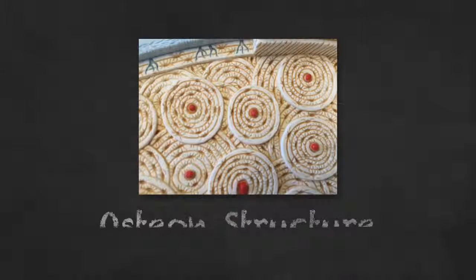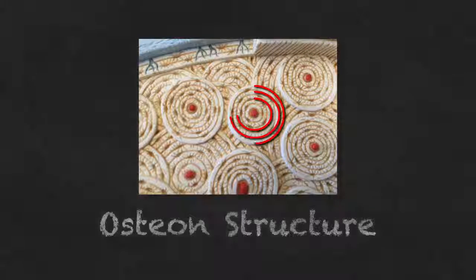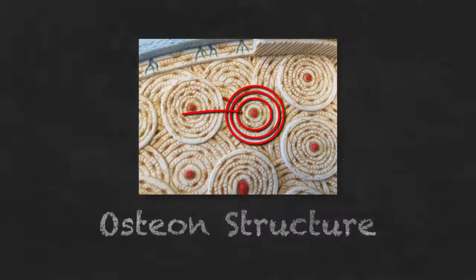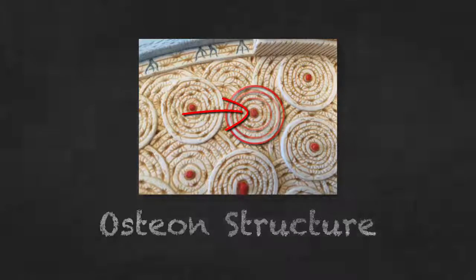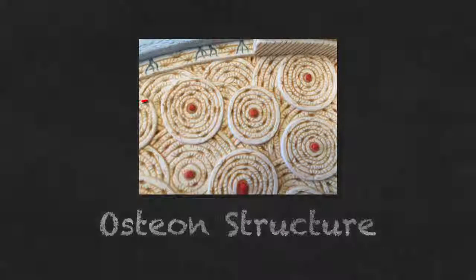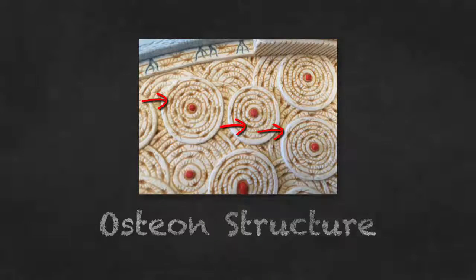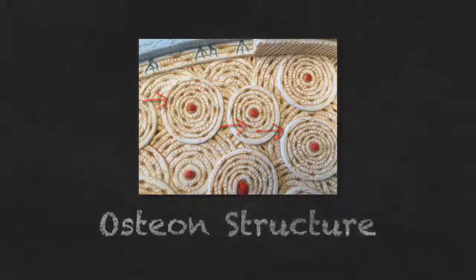The osteon is made up of concentric rings called lamellae. In the center, we see a blood vessel going through the central canal, also known as the Haversian canal. The little structures that look like ants with legs are the lacunae. The little legs are called canaliculi.